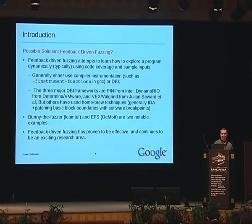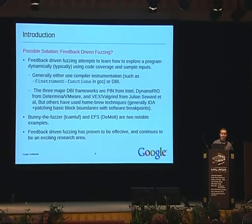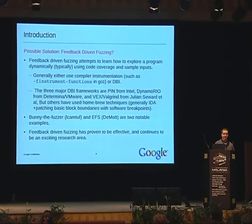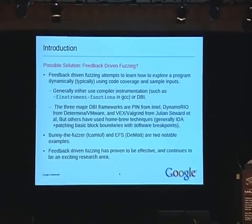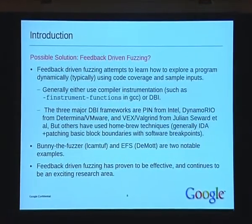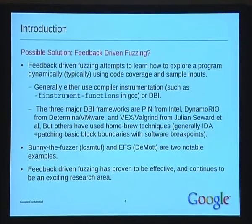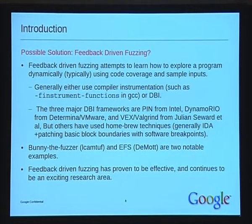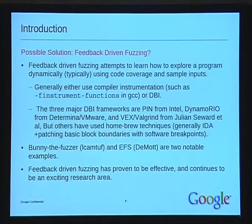A possible solution has been the introduction of feedback-driven fuzzing. Feedback-driven fuzzing attempts to monitor the application as you're fuzzing it and learn which parts of the code you're touching. This is really useful because you can see what kind of coverage you're getting at runtime and the fuzzer can make decisions about what code to touch — if it can see it's going down a particular path, it can try to continue down that path to reach some leaf node. Most implementations will either use finstrument-functions in GCC, which allows you to define callbacks when functions are called, or alternatively DBI — dynamic binary instrumentation.